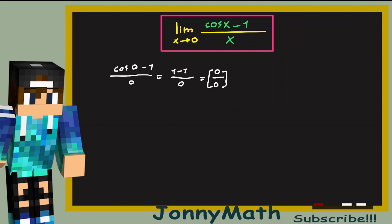So you might think we could use L'Hôpital's rule to find the value of this limit. It works, but we can't actually do it that way, and I'll show you why in a moment. Using L'Hôpital's rule, we get the limit as x goes to 0, and we differentiate the numerator of cosine of x minus 1, divided by the derivative of x.